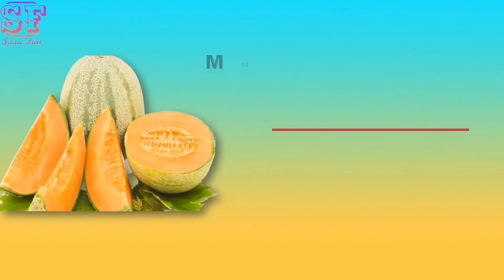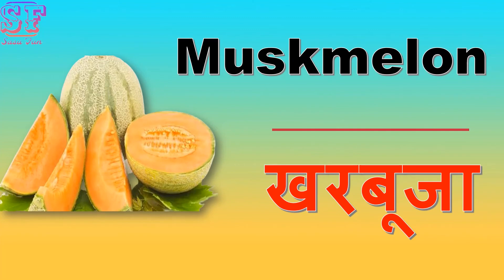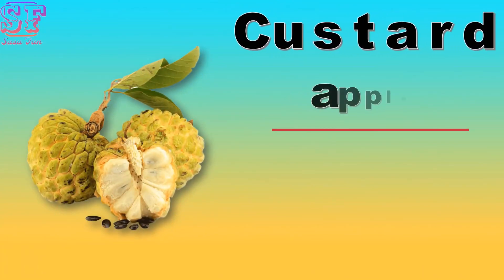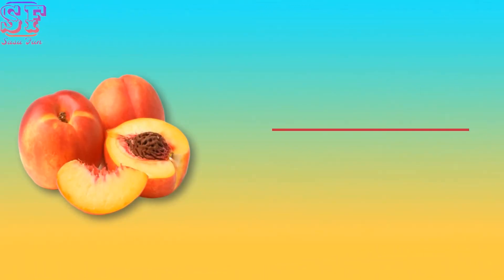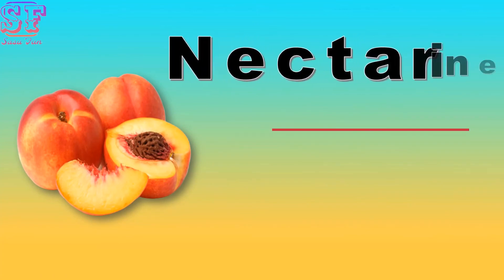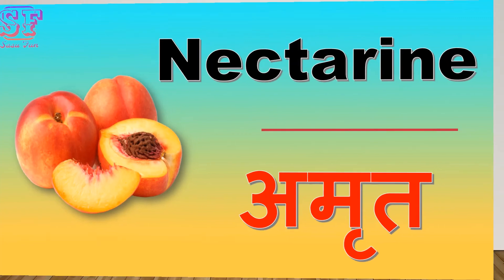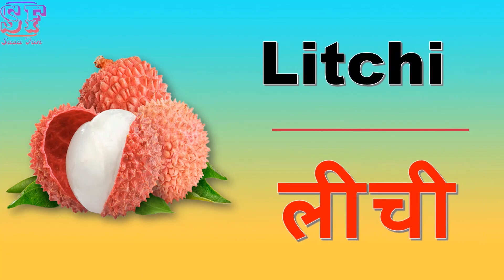Musk Melon — musk melon means Kharbooja. Custard Apple — custard apple means Sharifa. Nectarine — nectarine means Amrit Phal. Lychee — lychee means Lychee.